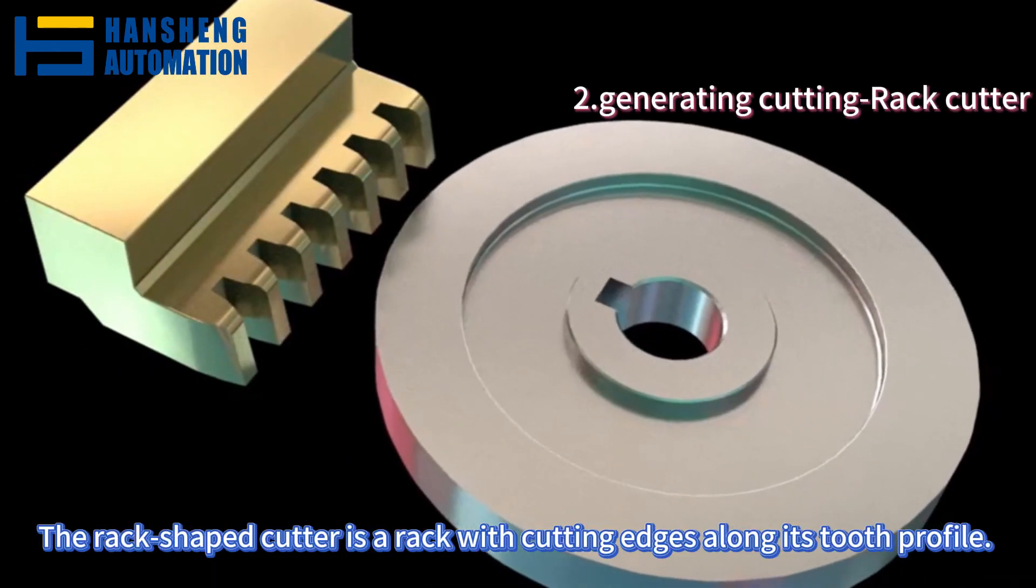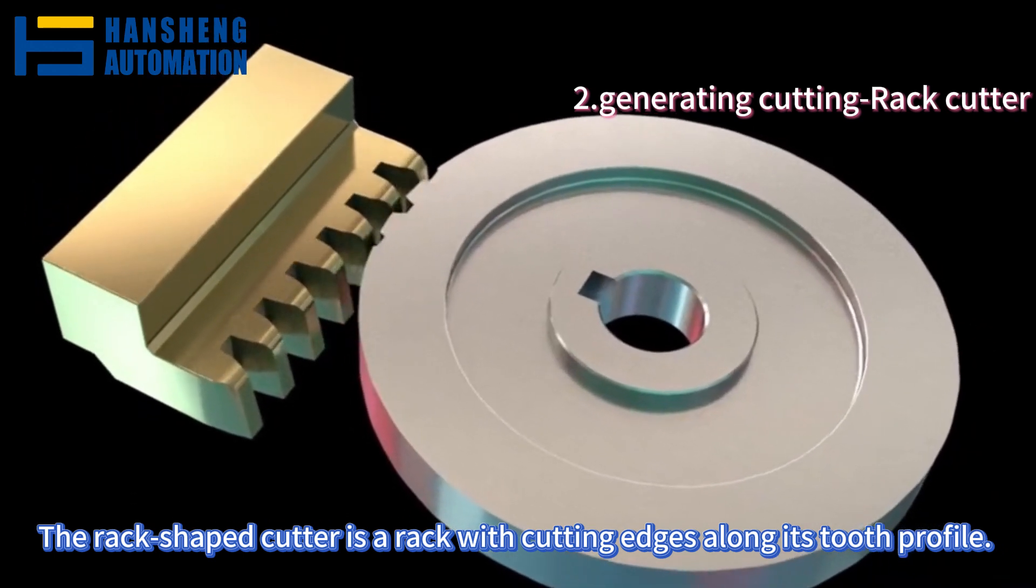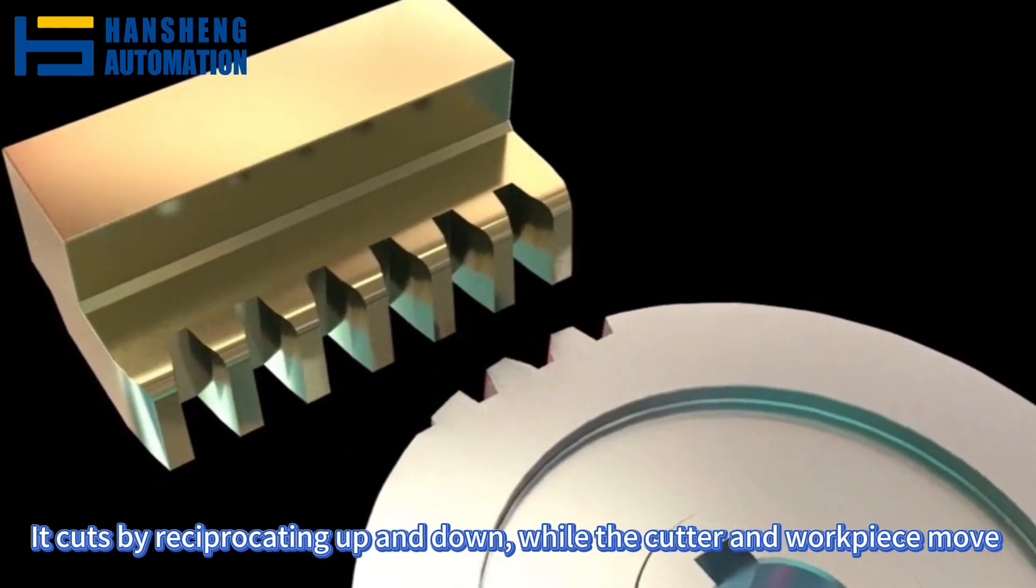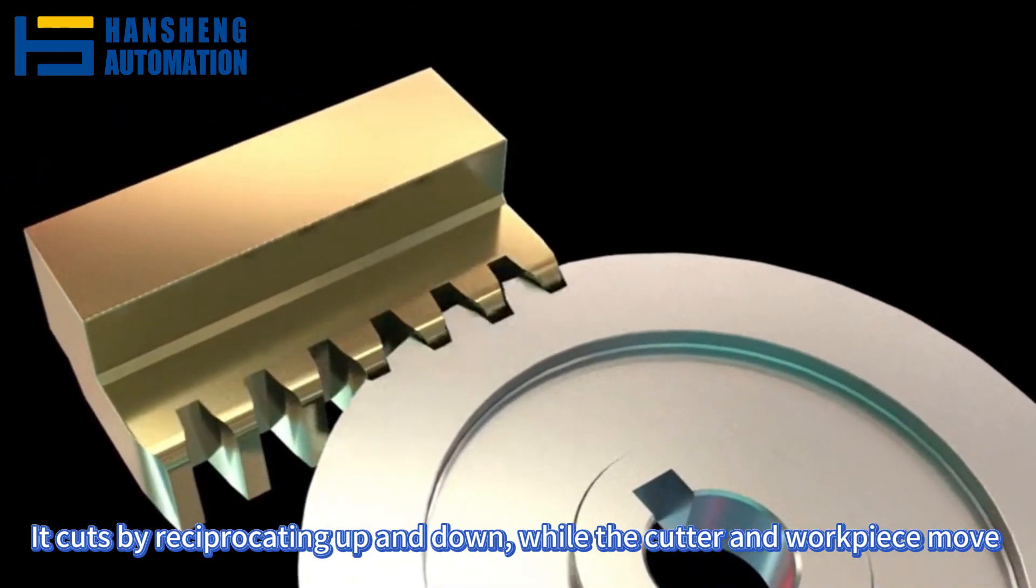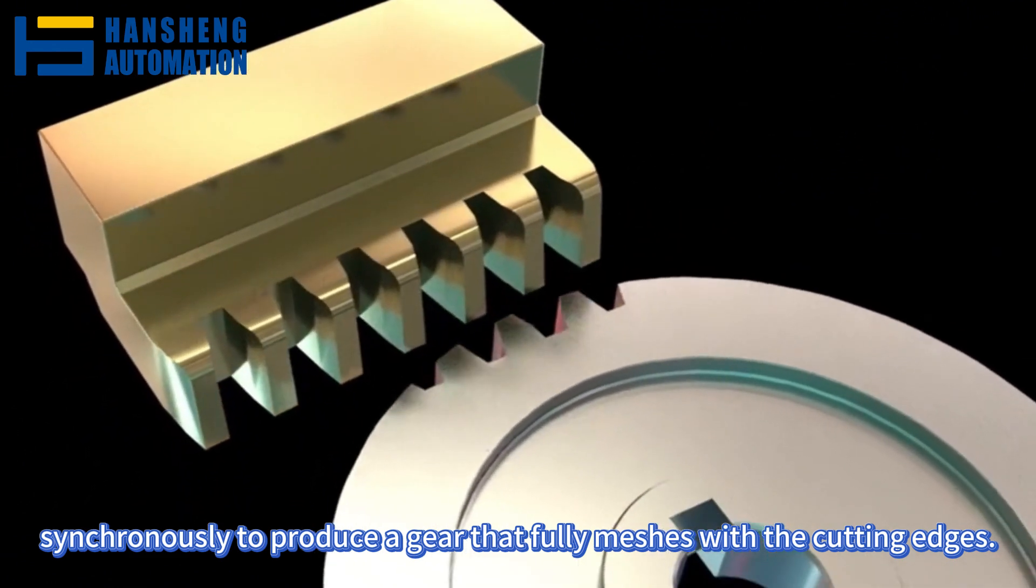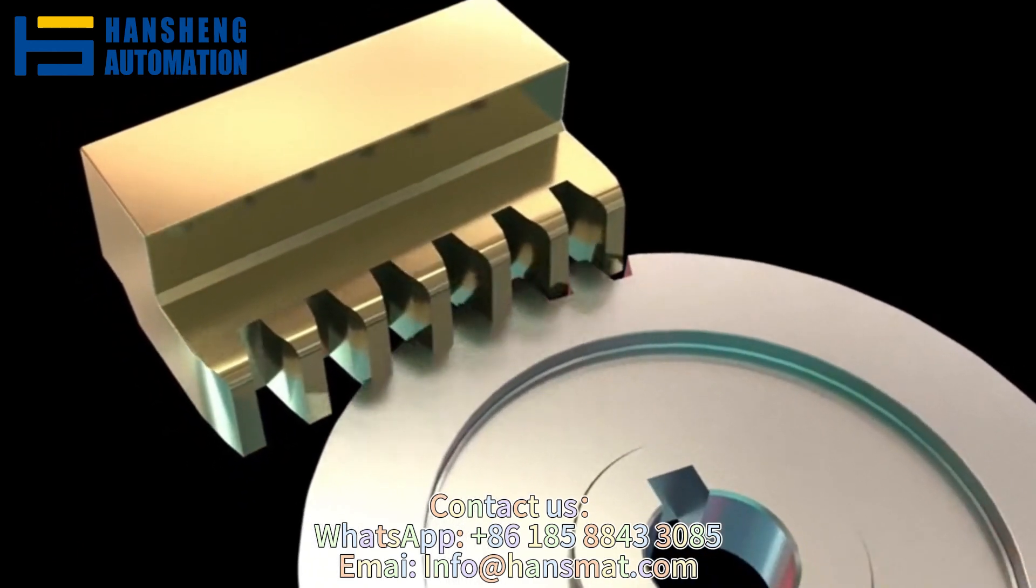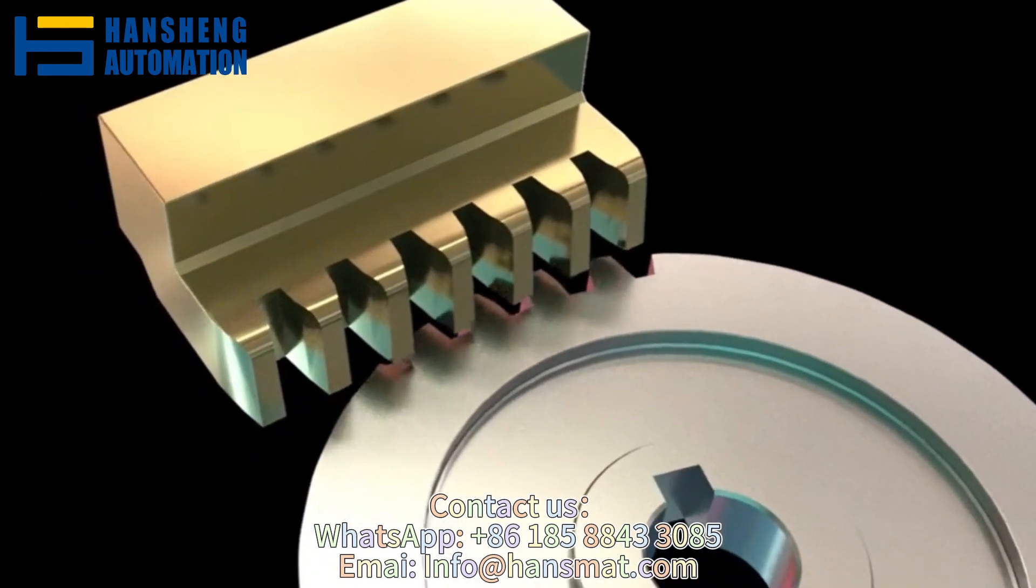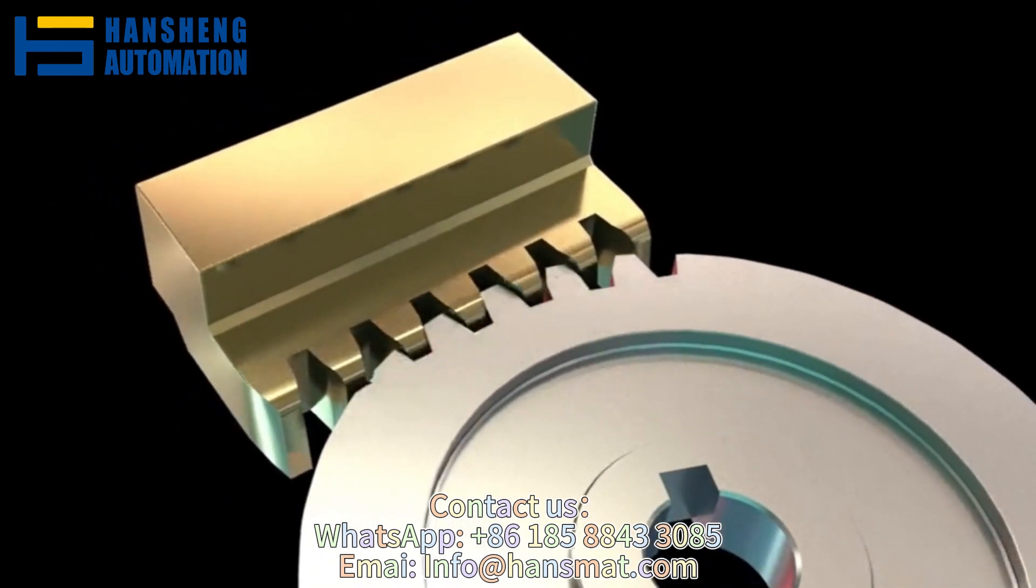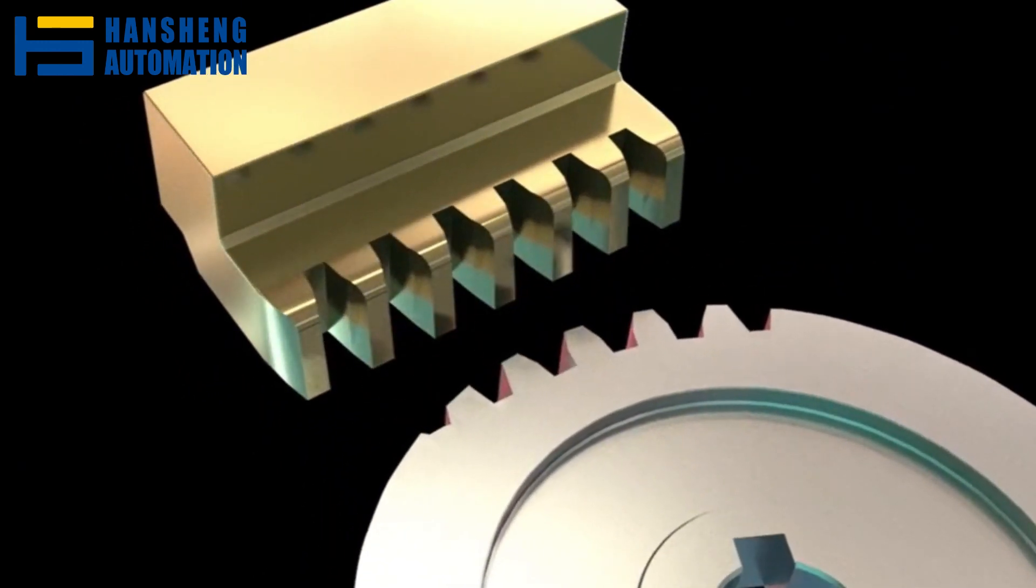The rack shaped cutter is a rack with cutting edges along its tooth profile. It cuts by reciprocating up and down, while the cutter and workpiece move synchronously to produce a gear that fully meshes with the cutting edges.